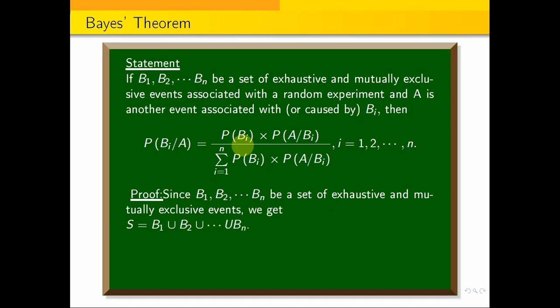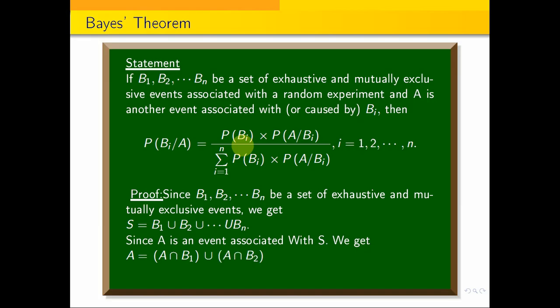I can write the answer like this. A is associated with the sample space. You will get A as a union: A intersection B1 union A intersection B2 union A intersection B3 union ... union A intersection BN. This is the total probability.